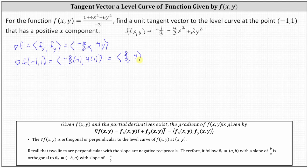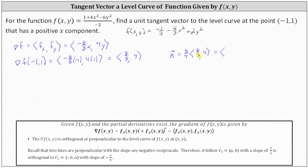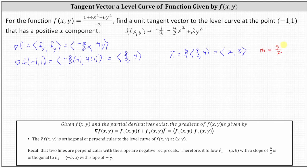But so would any scalar multiple. Let's eliminate the denominator of three and recognize that eight and four have a common factor of four. Setting the normal vector n equal to three fourths times the vector eight thirds comma four gives us two comma three. This vector is normal to the level curve at the point negative one comma one. The slope of this vector is three halves, which means any tangent vector to the level curve must have a slope equal to the negative reciprocal of three halves, or negative two thirds.